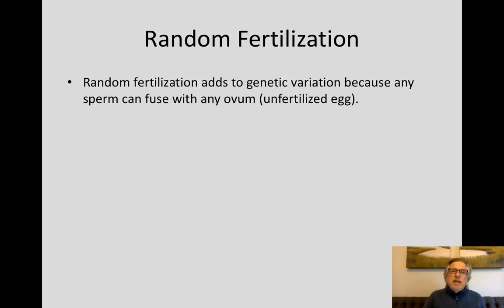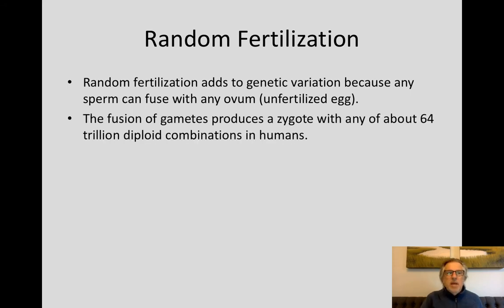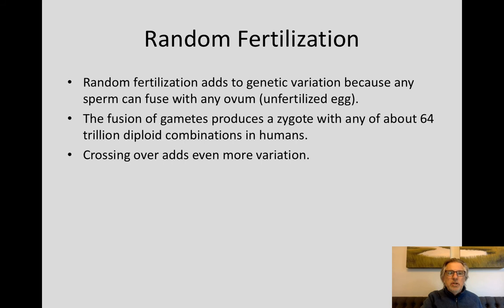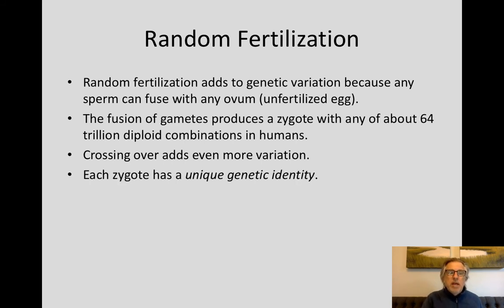Random fertilization further adds genetic variation because any sperm can fuse with any egg. The fusion of gametes produces a zygote with any of about 64 trillion diploid combinations in humans. Crossing over adds even more variation, so each zygote has a unique genetic identity.